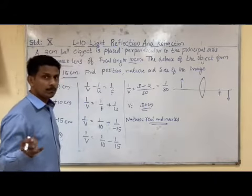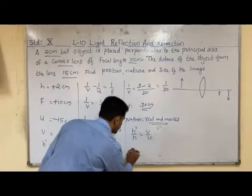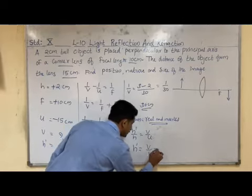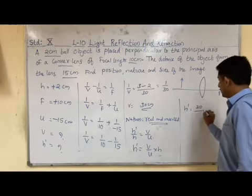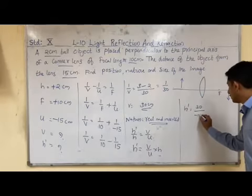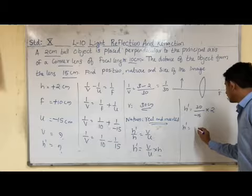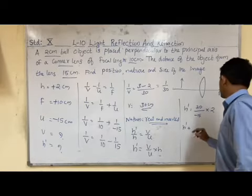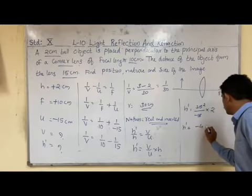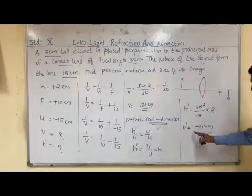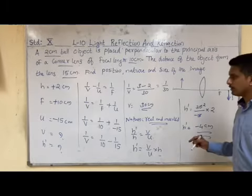Now using the magnification formula: m equals h'/h equals v/u. So h' equals (v/u) × h. Substituting: h' equals (30 / −15) × 2, which gives h' equals −4 cm. The height of the object is +2 cm and h' is −4 cm. The image is below the principal axis and the size of the image is enlarged. This is how we solve this problem.